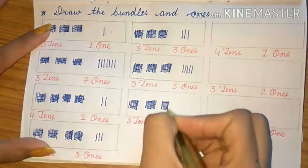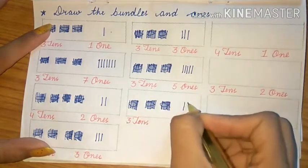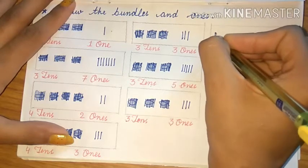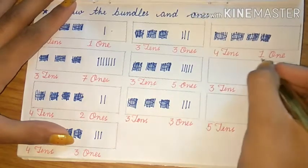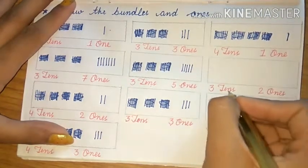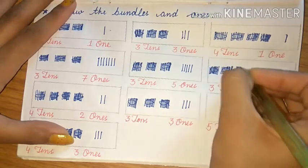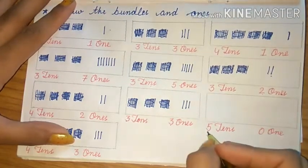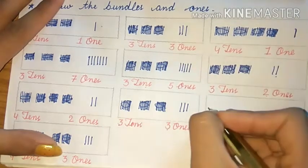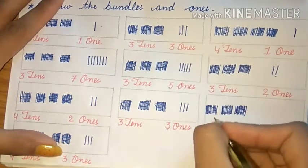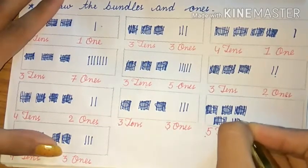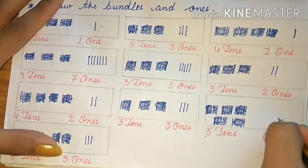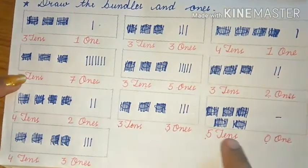Three tens. So we will make four bundles of ten and one one — it means only one stick you have to make. Here, three tens means three bundles and two ones, so two sticks I have made. Lastly, we have five tens, so we will make five bundles of ten. Here we have zero ones, so we will not make anything — nothing. So five tens, zero ones — it means fifty.